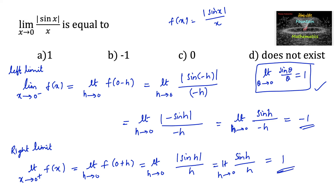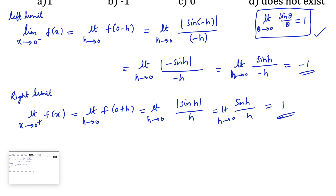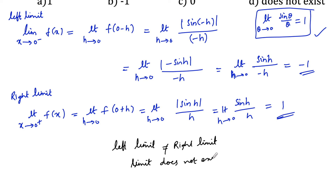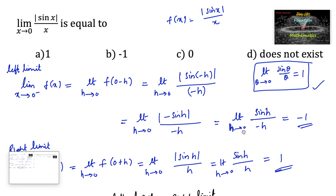We can observe that the left limit and right limit are both different: left limit minus 1 is not equal to right limit plus 1. Hence we can say that the limit does not exist. So the answer is option B.